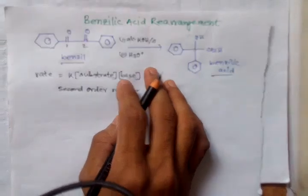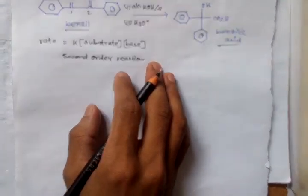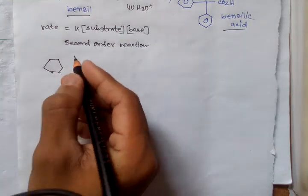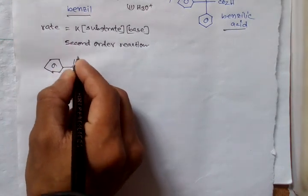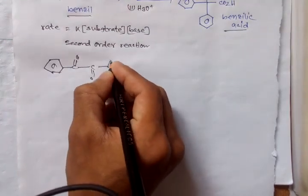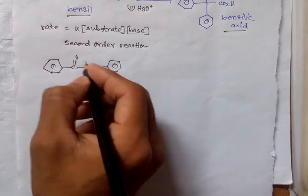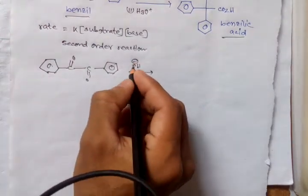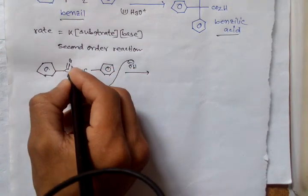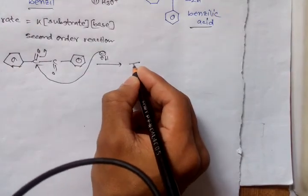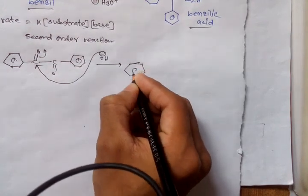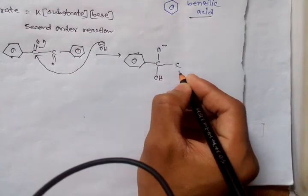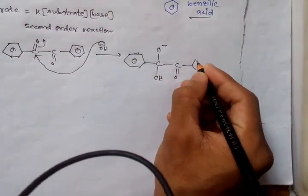What is the mechanism of this conversion? First, here is the benzil 1,2-diketone derivative. With treatment of a strong base, the base attacks here and this bond opens up. There is addition of OH, giving O minus here, and a double bond oxygen here, with the benzene ring remaining.